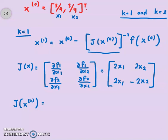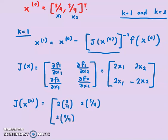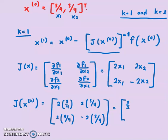Now we evaluate the Jacobian at x0, where x0 is (3/4, 3/4) for both x1 and x2. So the Jacobian at x0 is: 2·(3/4) = 3/2, 2·(3/4) = 3/2, 2·(3/4) = 3/2, and negative 2·(3/4) = negative 3/2. So the Jacobian matrix at x0 is: [3/2, 3/2; 3/2, −3/2]. Don't forget we need the inverse of this matrix for the Newton-Raphson formula.